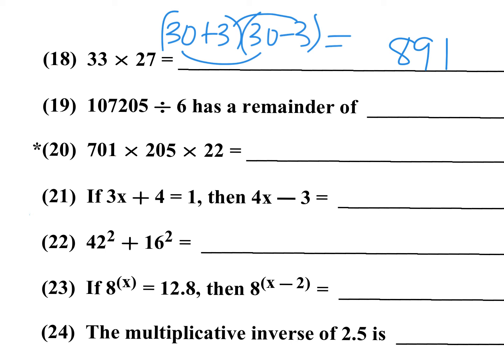Number 19 is a remainder problem. When dividing by 6 it must be even and divisible by 3. Add the digits: 1 plus 7 is 8, plus 2 is 10, plus 5 is 15. The nearest multiple of 6 below 15 is 12, so 15 minus 12 equals 3. The remainder is 3.